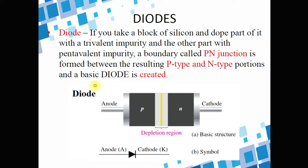A diode has terminals, what we call anode and cathode, denoted as A and K. The anode is the positive side of the diode, and the cathode is the negative side of the diode. We also have a depletion region in between the P-type and the N-type material. That is basically the structure of the diode.